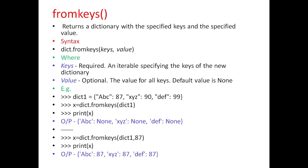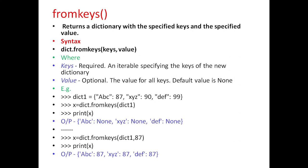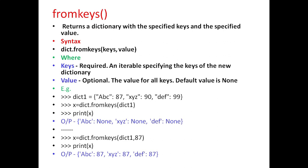Next is fromkeys. This method returns a dictionary with the specified keys and the specified value. The general syntax is dict.fromkeys with parameters keys and values, where keys is a required parameter which is an iterable specifying the keys of the new dictionary, and value is an optional parameter which is the value for all keys — default value is None.